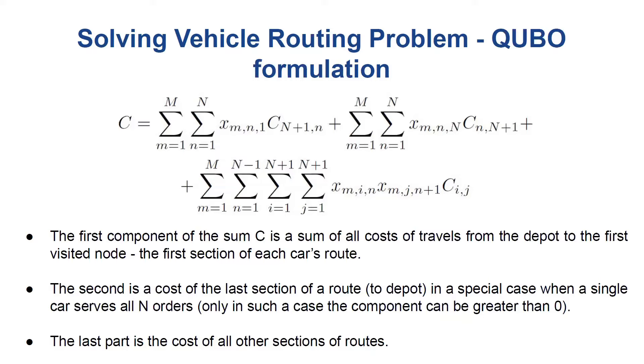The second component is a cost of the last section of a route to depot, in a special case when a single car serves all N orders. Only in such a case this component can be greater than zero. The last component is the cost of all other sections of routes.